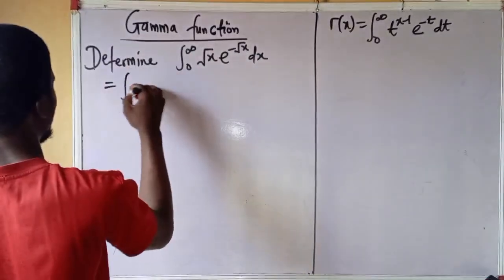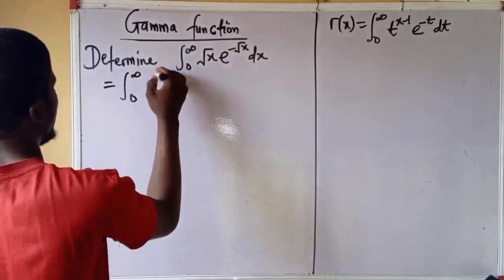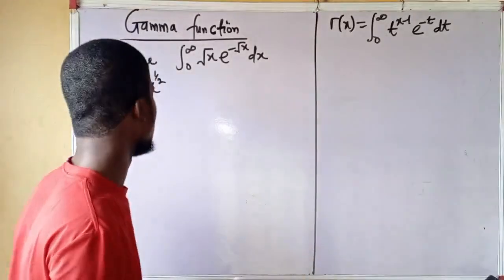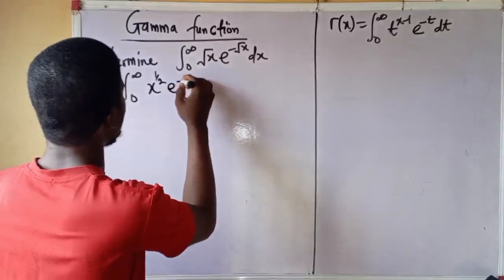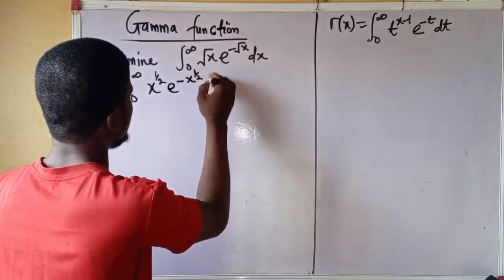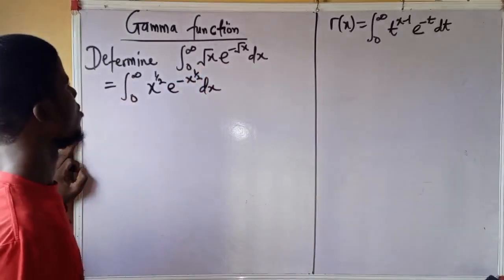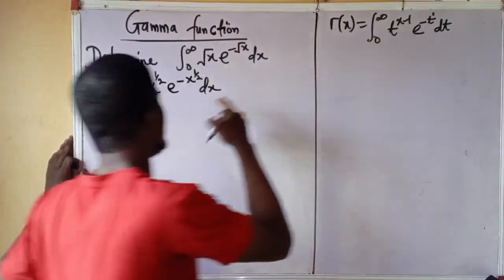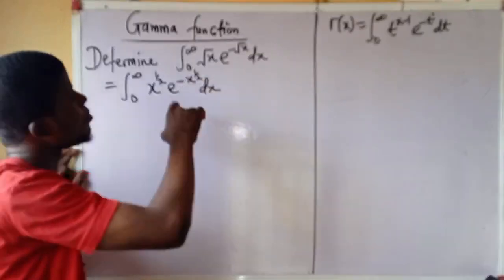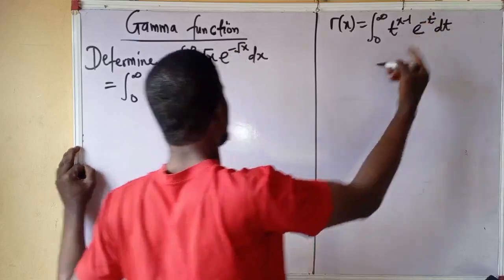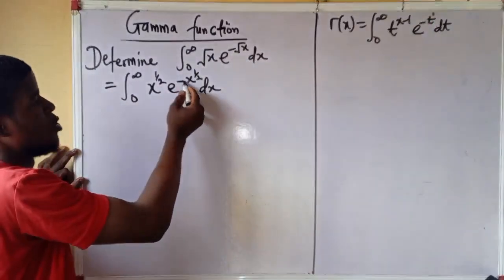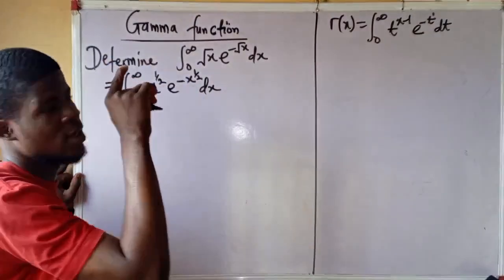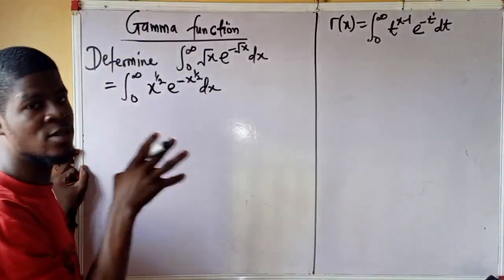We can write this as the integral of x to the power of 1 over 2, since the square root signifies the power of one-half. Looking at this relative to the definition: t has power 1, but here x has power 1 over 2. The coefficient of x in the exponent is minus 1 in both cases, so it's the power of x that differs. Because the power of x is not 1 like in the definition, we need to modify this integral.